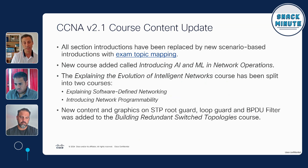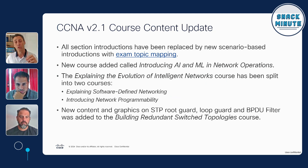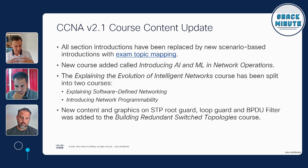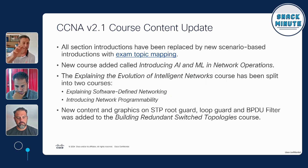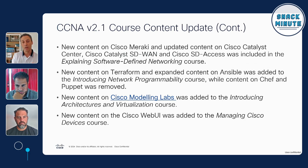The big one: we've added a whole new course around AI and ML in network operations, which maps to the blueprint item we talked about earlier. We also looked at the course formerly called 'Explaining the Evolution of Intelligent Networks' — it was a huge course combining all the programmability stuff and all the SDN stuff. So we decided to split it and update the content: we expanded and improved the network programmability section and also expanded the SDN section, making two smaller chunks instead of one massive course. We've also added the new spanning tree content to the spanning tree course.